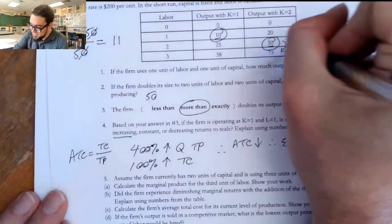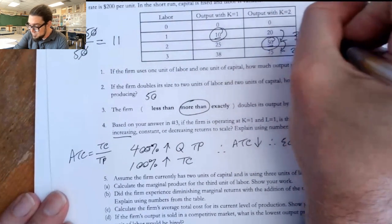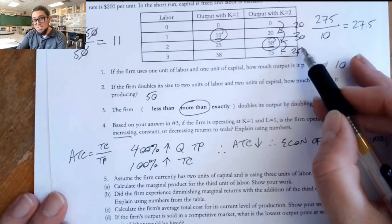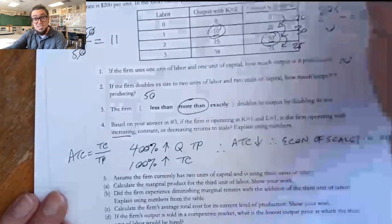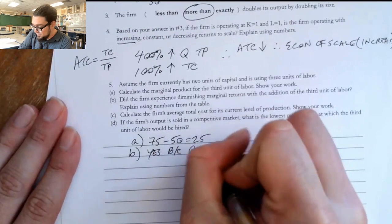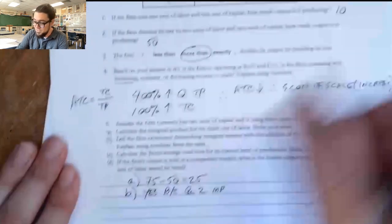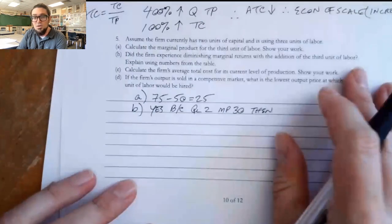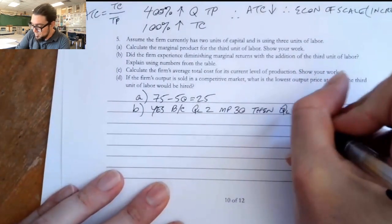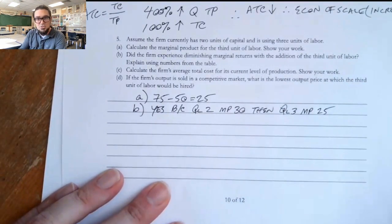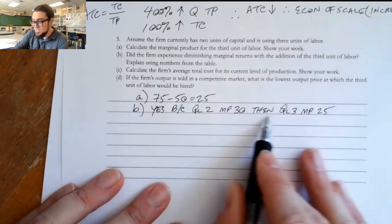Did the firm experience diminishing marginal returns with the addition of the third unit of labor? Explain using numbers from the table. Well, so when we went from here to here, that was 25. When we went from here to here, that was 30. And we went from here to here, that was 20. So because we had marginal products that were decreasing, we went from 30 to 25, we would say yes, there is diminishing marginal returns. Yes, because quantity of labor 2, marginal product was 30 units. The second worker was 30. Then quantity of labor 3, the marginal product was 25. And so the marginal product decreasing is what told us we're in diminishing marginal returns.